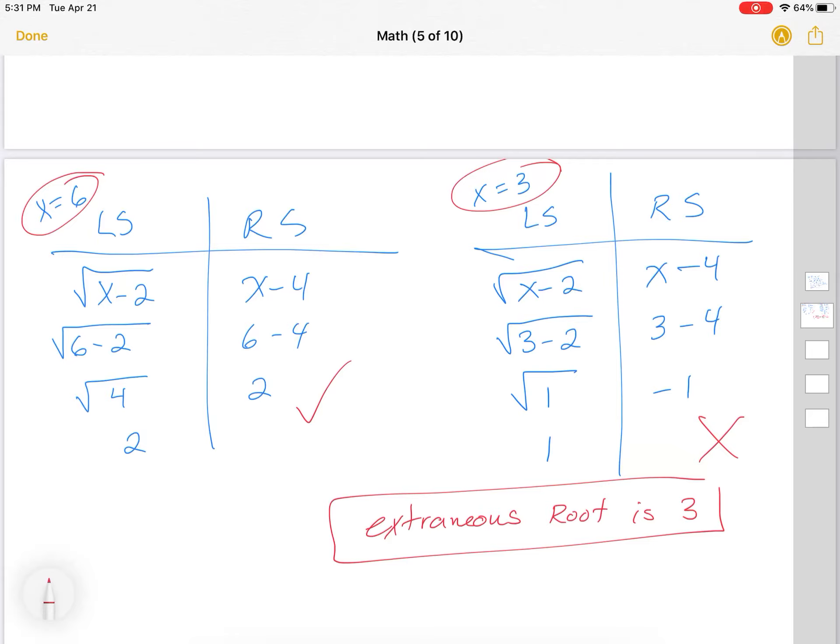Now you asked, could you have a negative number as an extraneous root? Yes, because if I look here, if I had gotten a negative 1, negative 1, oh no, actually for this, I couldn't have gotten a negative number. It really depends on what's under the radical. So if under my radical had happened to be